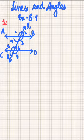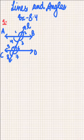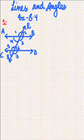Welcome everyone. We are on RD Sharma, Lines and Angles Chapter, Exercise 8.4, Question No. 1, which says that in the figure AB, CD and Angle 1 and Angle 2 are in the ratio 3:2. Determine all the angles from 1 to 8.